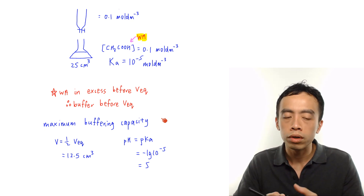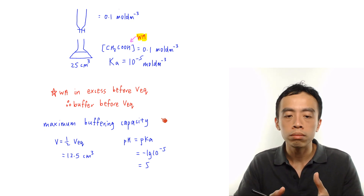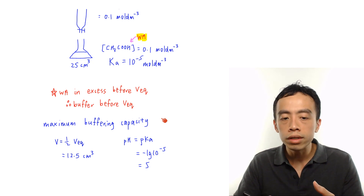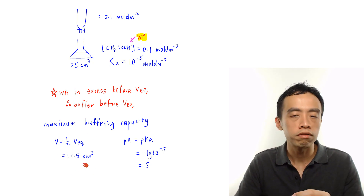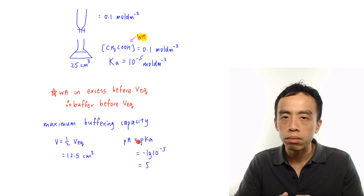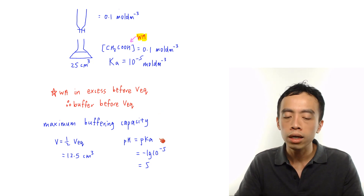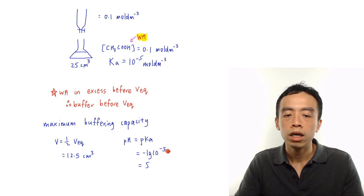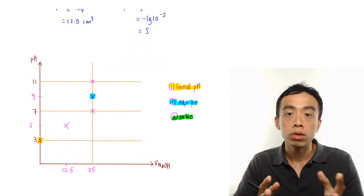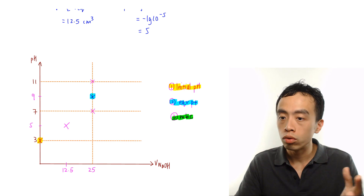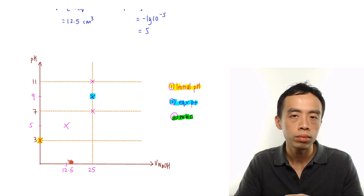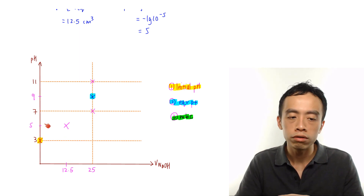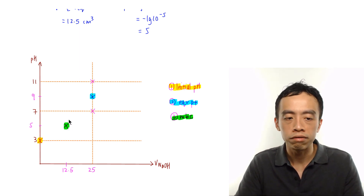Once we have determined the buffer region is before Veq, we calculate maximum buffering capacity. The volume will be at half-equivalence, 12.5 cm³. The pH for maximum buffering capacity is pH equals pKa, which is minus log 10 to the power of minus 5, so pH equals 5. Back to the graph, maximum buffering capacity is at volume equals 12.5 cm³ and pH equals 5. At maximum buffering capacity, the gradient at that point equals 0, so this will be a point of inflection.